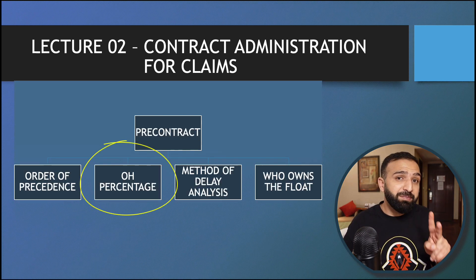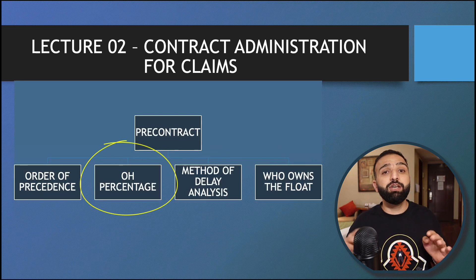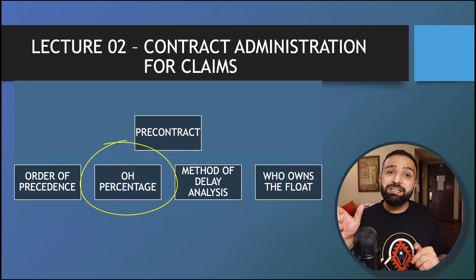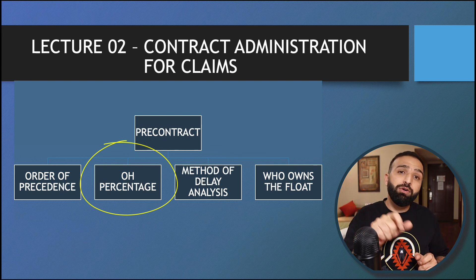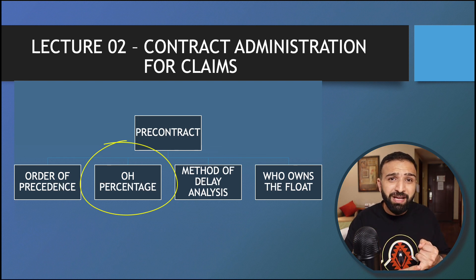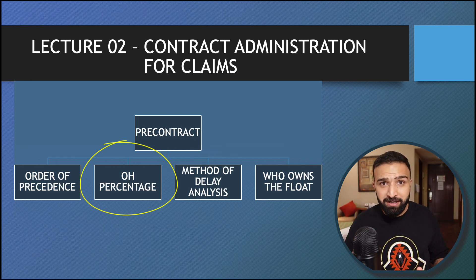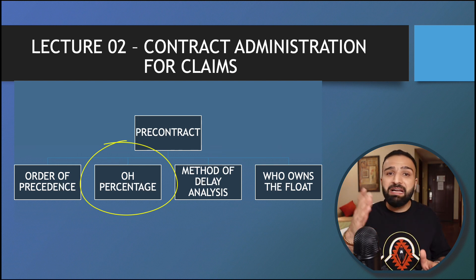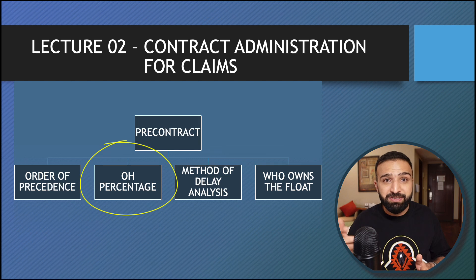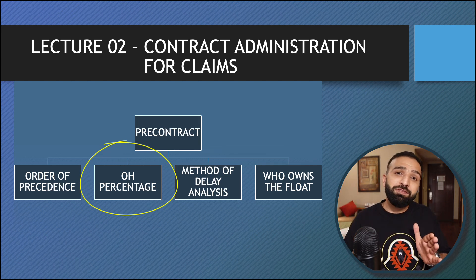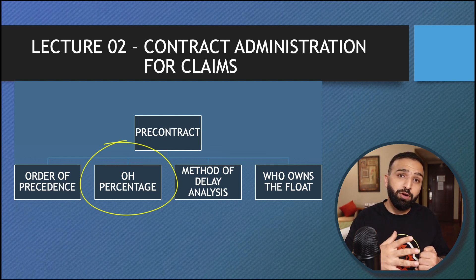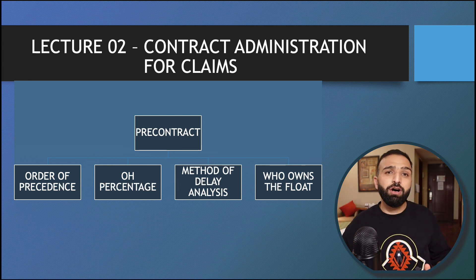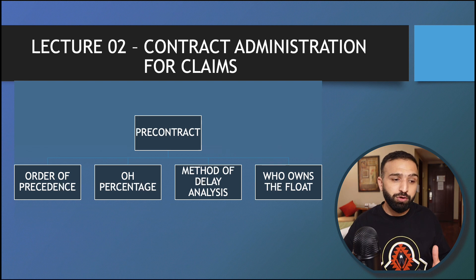The second thing that needs to be implemented at the pre-contract stage is the overhead percentage — basically the percentage of overhead you are allowed to apply on your variations, extension of time, and any other claim. If this ONP is defined properly at, say, 10, 12, or 20 percent, it saves a lot of hassle and you do not have to prove your overhead and profit. We will discuss this in more detail in the lecture on prolongation cost later in this course.